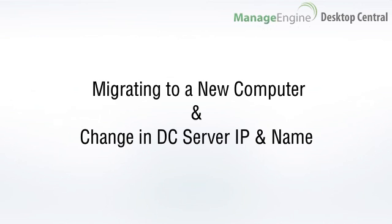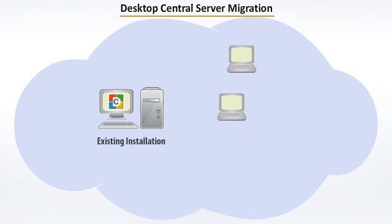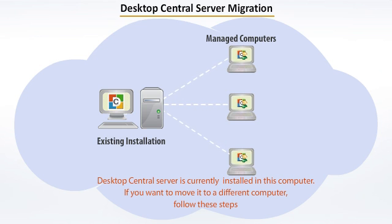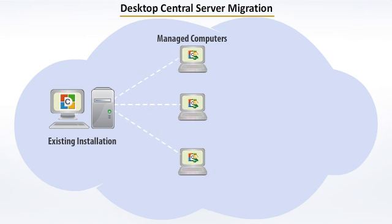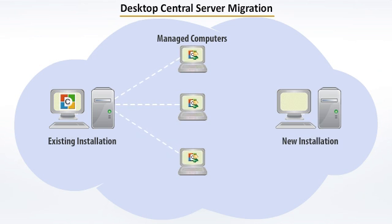Consider the first use case where the installation has to be moved to a different computer altogether. When you move the installation, you should perform these operations. First, copy the installation to the new computer. Second, change the IP address and DNS name of the server in all the agents so that they will contact the new server subsequently. Additionally, if you are running the database separately, you should configure it to accept connections from the new IP address.